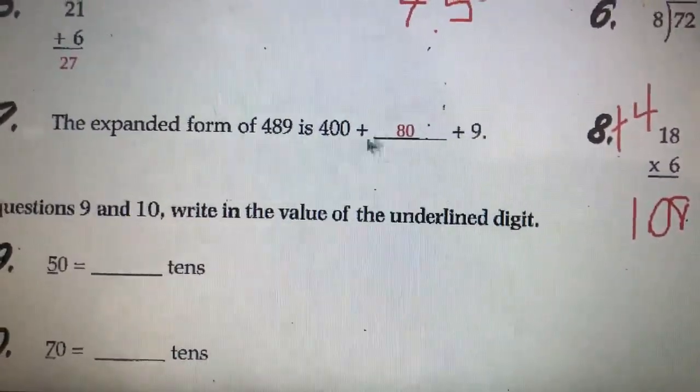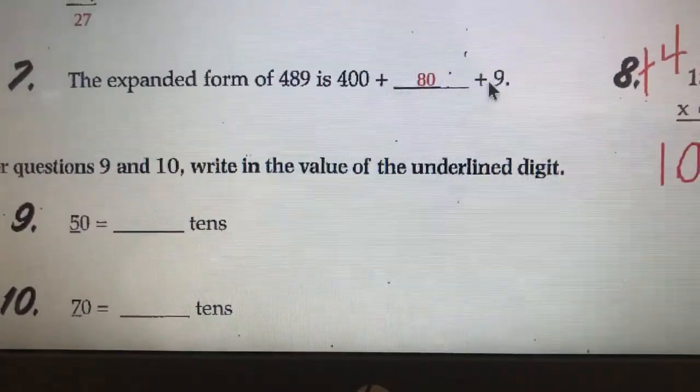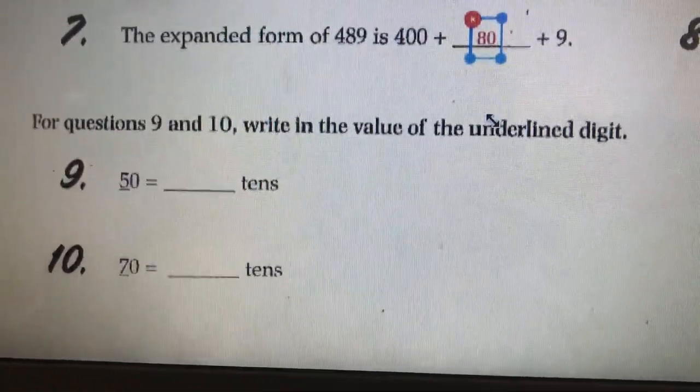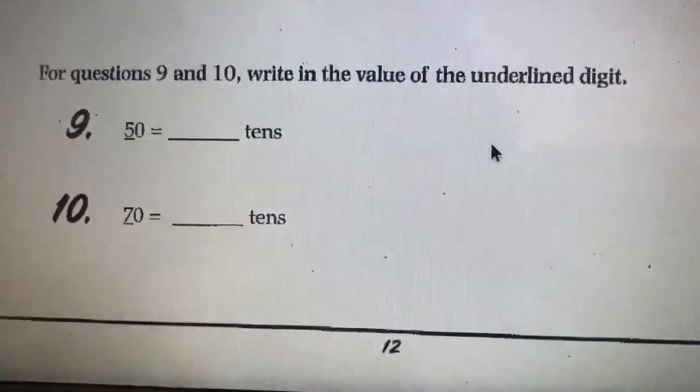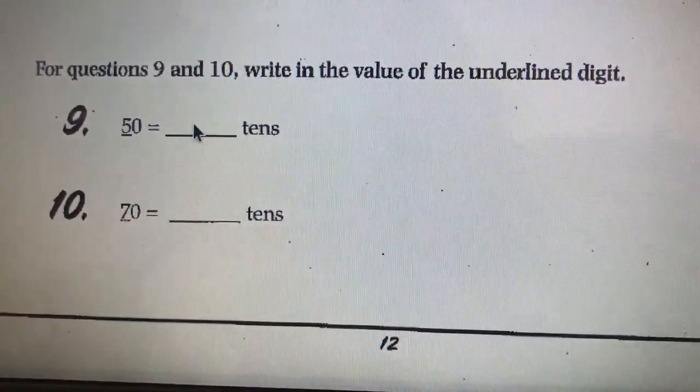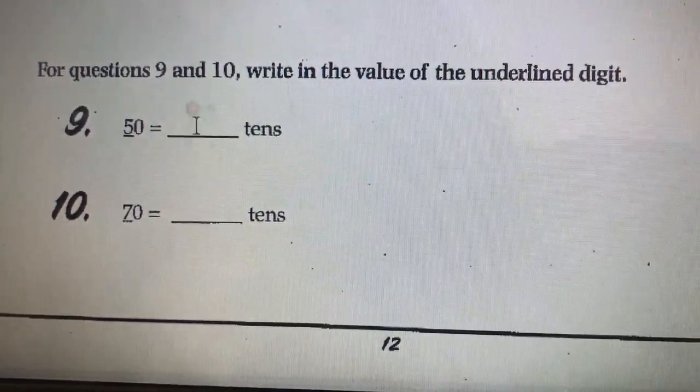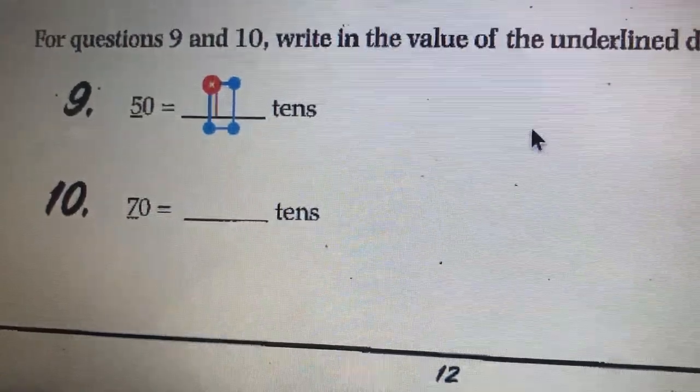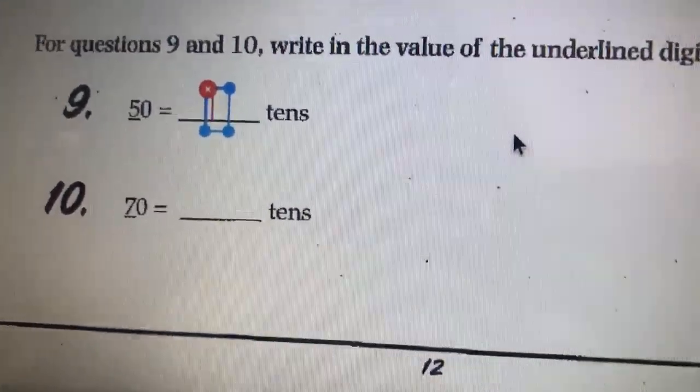So, if you did add these up, 400 plus 80 plus 9, you would get that 489. Write the value of the underlined digit. So, we have a number 5. That would give you 50.